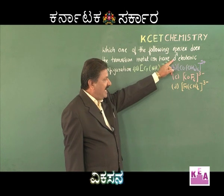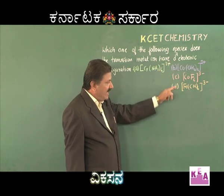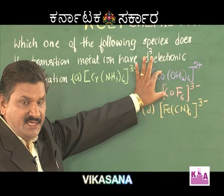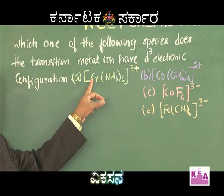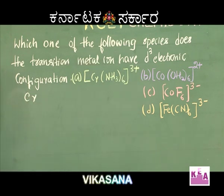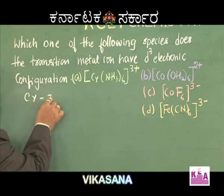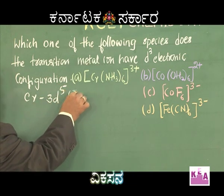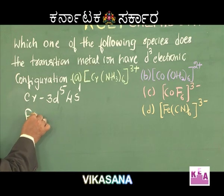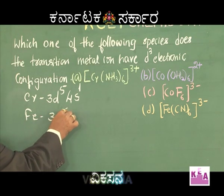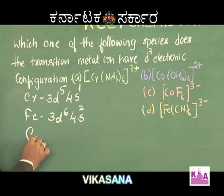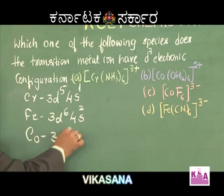To get the d³ electronic configuration, we should first note the electronic configurations of the central metal atoms. We have cobalt in two of these complexes, iron in one, and chromium in one. Chromium with atomic number 24 has the electronic configuration 3d⁵4s¹. Iron has the configuration 3d⁶4s², and cobalt has 3d⁷4s².